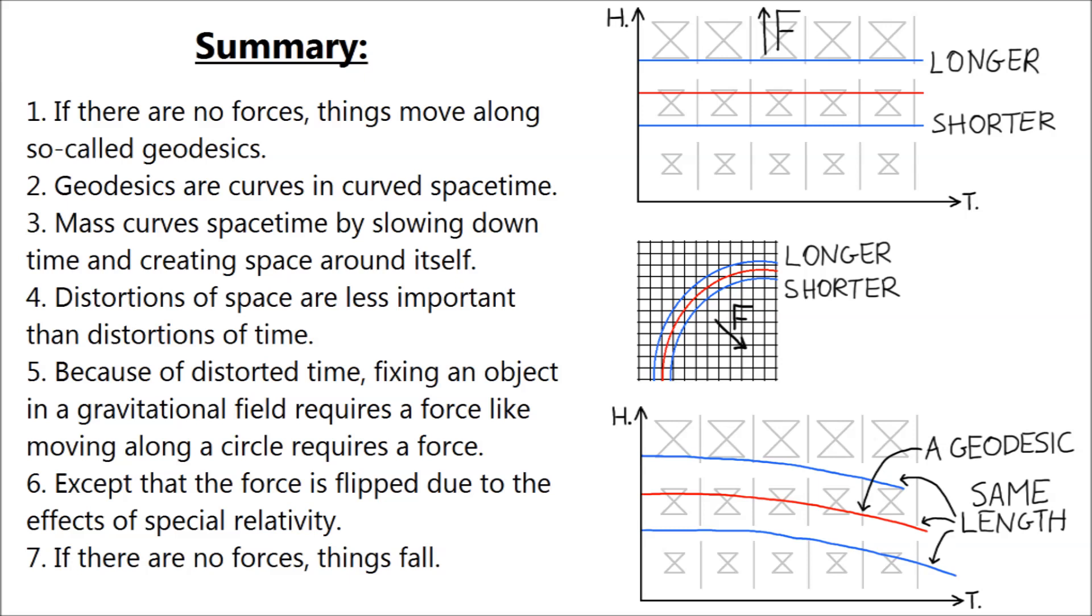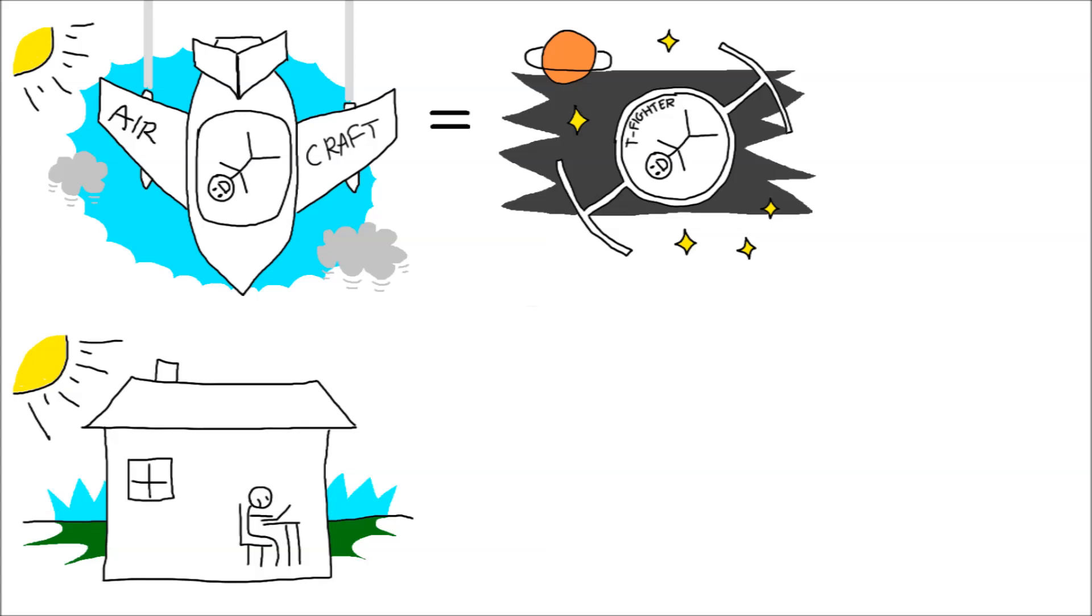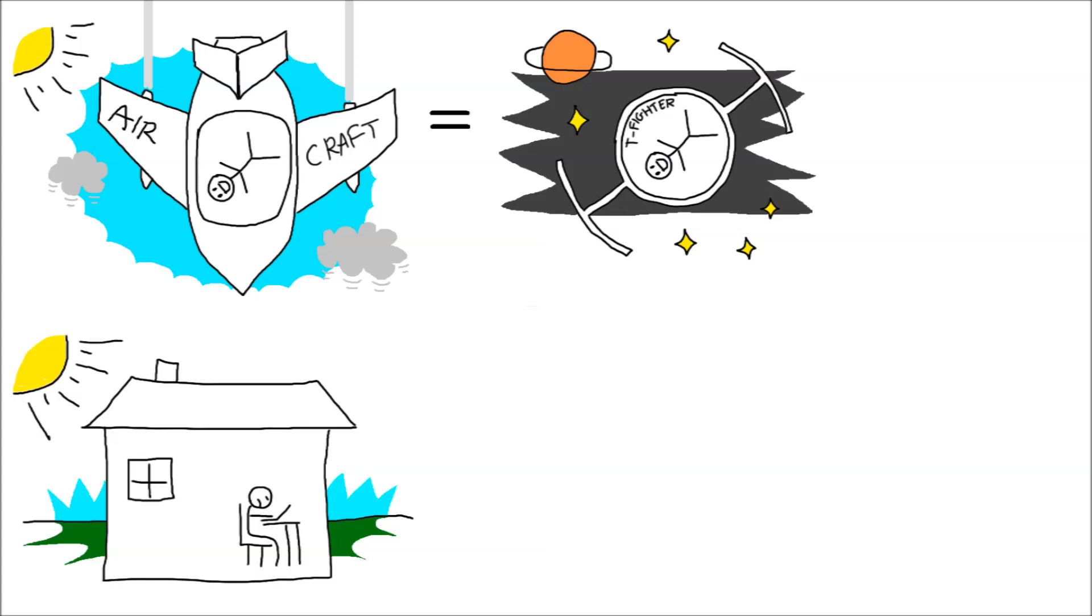If there are no forces, objects fall. This may seem counterintuitive, but if you think about it, it does make sense. When you are free falling in a gravitational field, you don't feel any forces, exactly like in the outer space. But when you sit on a chair, you feel that the chair is pushing up against your bottom, exactly as if you were sitting in an accelerating rocket. This is the famous Einstein's equivalence principle, an observation that led him to develop his theory.